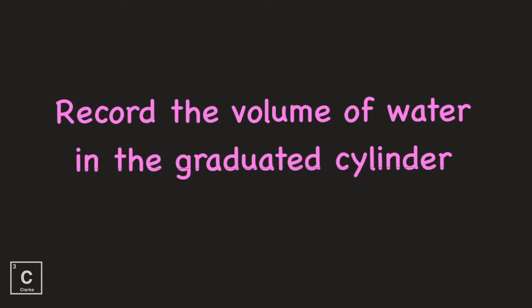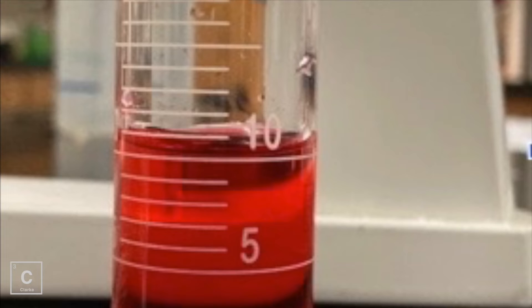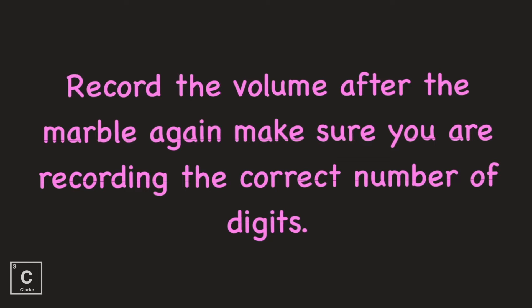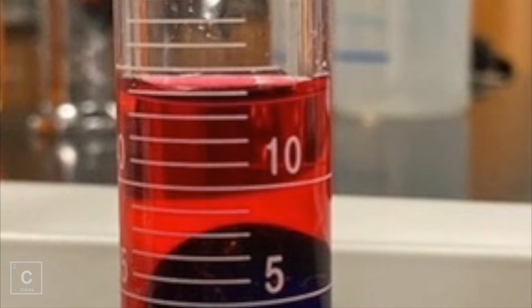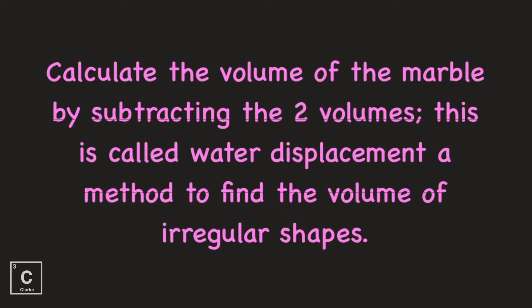Record the volume of water in the graduated cylinder. We're going to record the volume again after we add the marble. Make sure you're reading the correct number of digits on that graduated cylinder. Calculate the volume of the marble by subtracting the two volumes. This is called water displacement. This is a method to find the volume of irregular shapes.